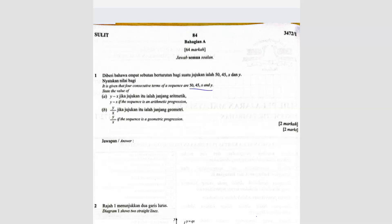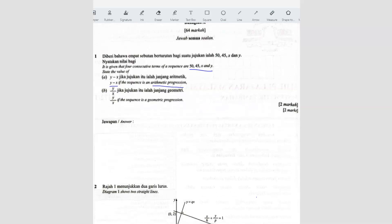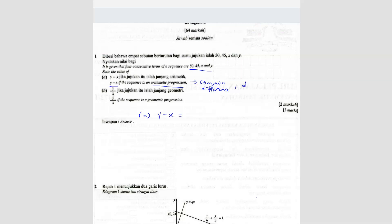State the value of x minus y if the sequence is an arithmetic progression. In an arithmetic progression, you should have a common difference, which is the d value. Since they're asking for x minus y, we're looking for the common difference. The common difference for y minus x should be the same as 45 minus 50, so the answer is negative 5.